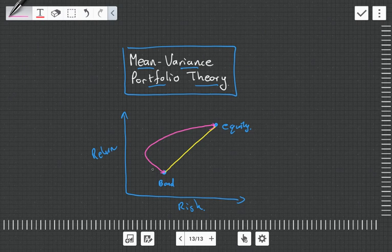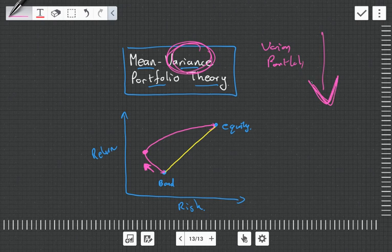And why are we getting this bend here? That was the whole thing, why they won the Nobel Prize, and why everyone was like, wow, this is such a cool theory. Because what they showed was that the variance of the portfolio decreases with a thing known as diversification.